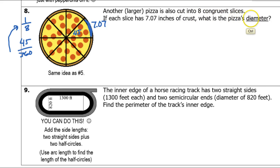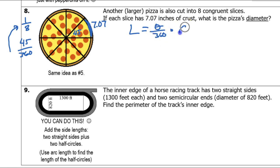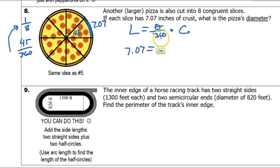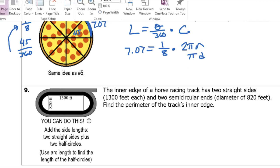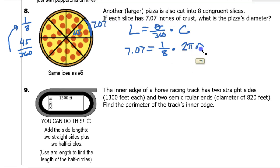They want to know what is the pizza's diameter. Our formula goes like this: the arc length is equal to some fraction of the circumference — that's the formula we use over and over again. Substituting in what we know: the arc length is 7.07, the fraction is 1/8 — or you could put 45 out of 360 — and the circumference is 2π times the radius. But it would be even more clever to put π times diameter right now. Some students only know 2πr, so I'm just going to stick with that.